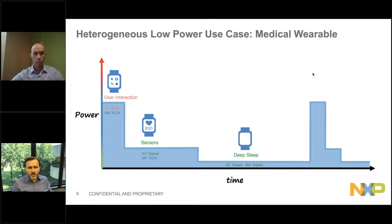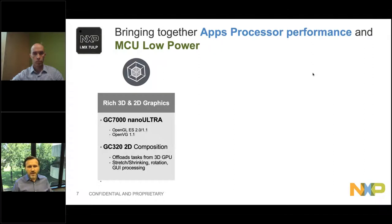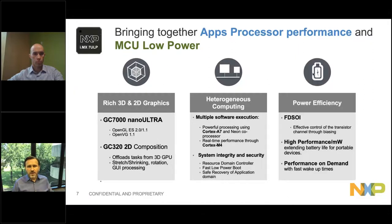To summarize: we have rich 3D and 2D graphics. Not only do we have a 3D GPU that handles 2D graphics, but we also added a separate 2D GPU — and that's something important to discuss today. Brian will show a couple of different use cases and the power consumption associated with those use cases when using 3D and 2D graphics accordingly. Heterogeneous computing is really important, and we stress heterogeneous domain computing, where we build domains around the heterogeneous architecture, enabling power efficiency with FDSOI and the right architecture.